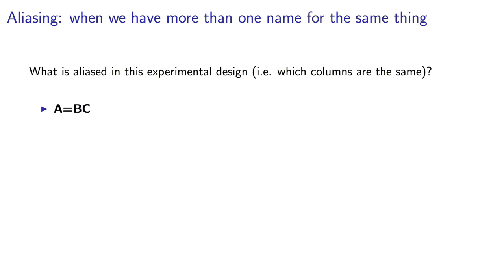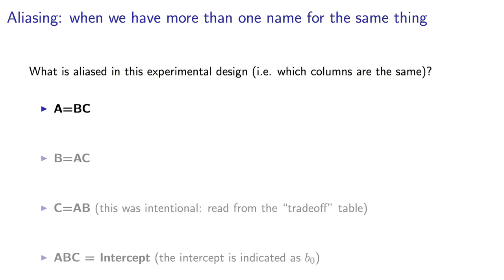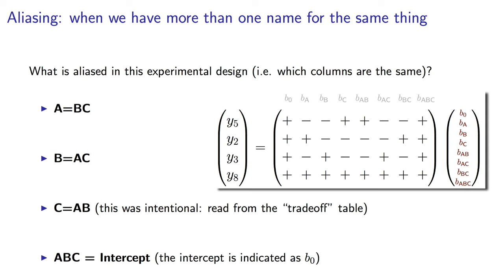Back to these experiments, where the alias for A is B times C. There are three other aliases. B is the alias for A times C. C is the alias for A times B. And that one was intentional, remember? We chose to set C as the product of A and B in our design. Finally, the last alias is the three-factor interaction between A, B and C is aliased with the intercept.